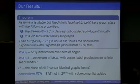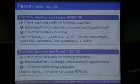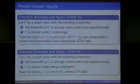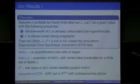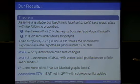What we have done? Well, is MSO2 essential? We thought it's not. And we don't like the definition of strongly unbounded. So this is the new formulation - our first result. Let's fix a label set L and have a class of graphs such that the tree-width is densely unbounded polylogarithmically and it's closed under taking subgraphs. Then the model checking problem is not in XP unless the non-uniform exponential time hypothesis holds.